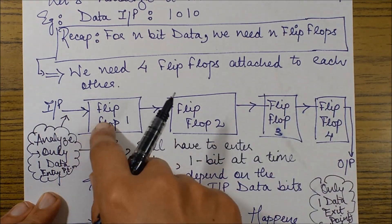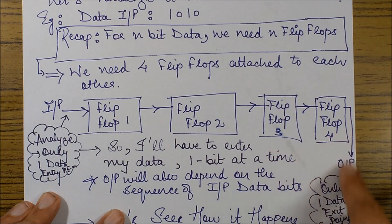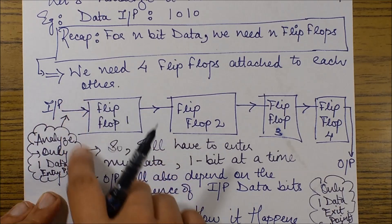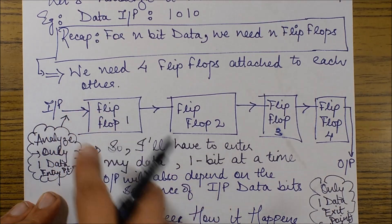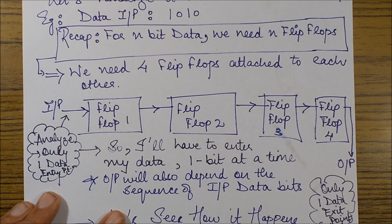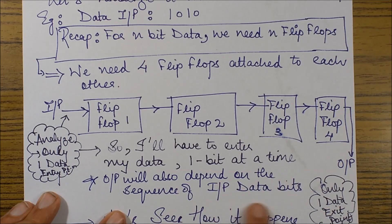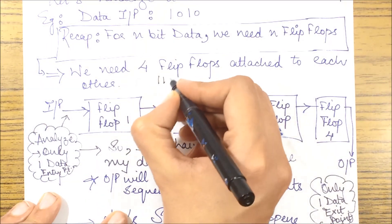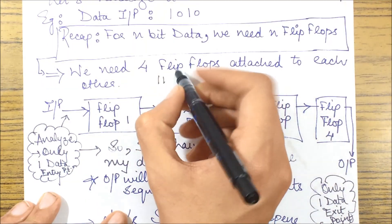This has only one data entry input point and one data exit point. I'll have to enter my data one by one from here, and since it has only one data input point, I'll be entering it as one input bit at a time. The output sequence will essentially depend upon the sequence of the input data bits.